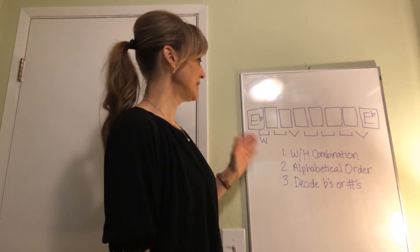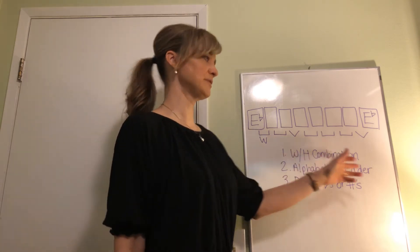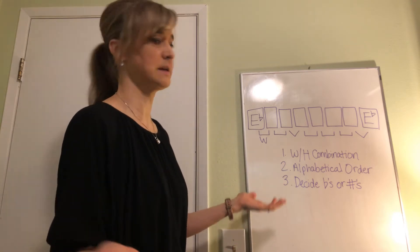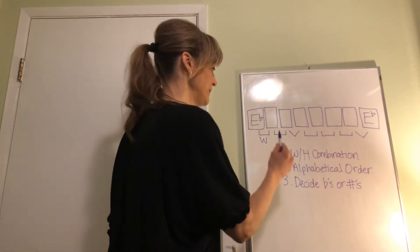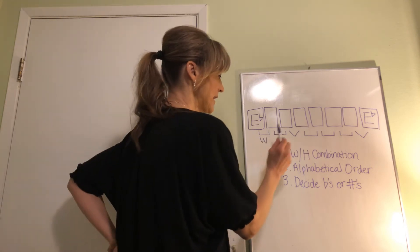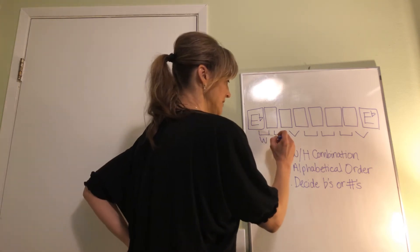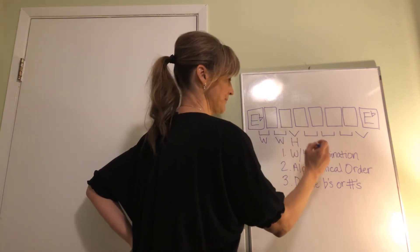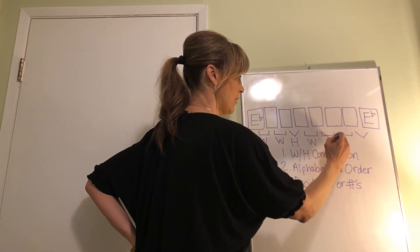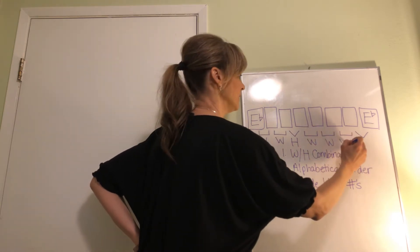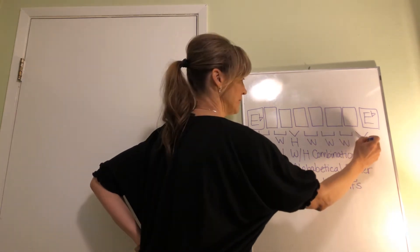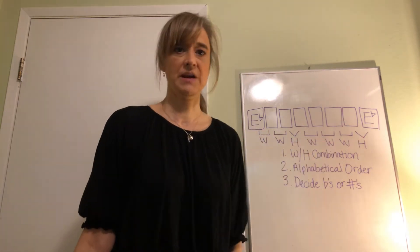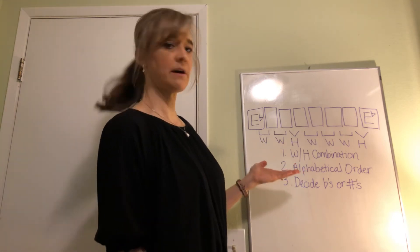So first, what we do is we put in our whole step, half step combination. Hopefully I'm giving you some hints here based on what I've written. Let's see if we can remember. Whole step, what's next? Whole, half, whole, whole, whole, half. So two wholes and a half, three wholes and a half.